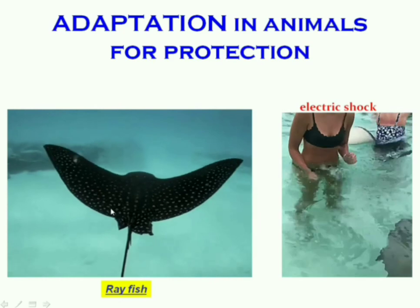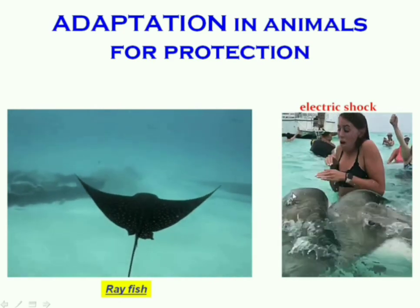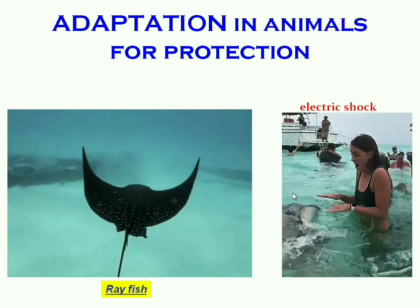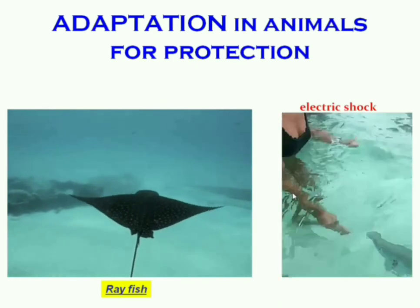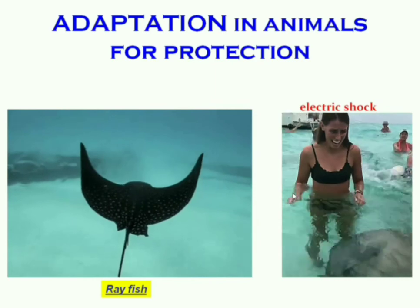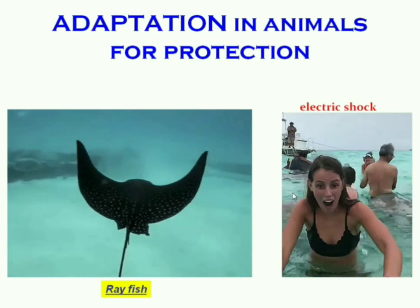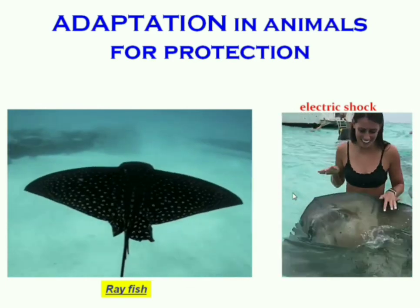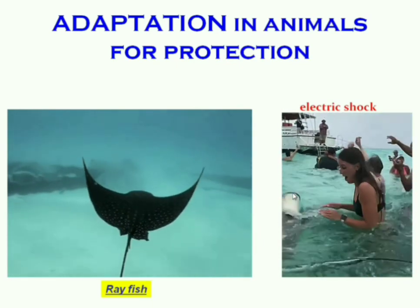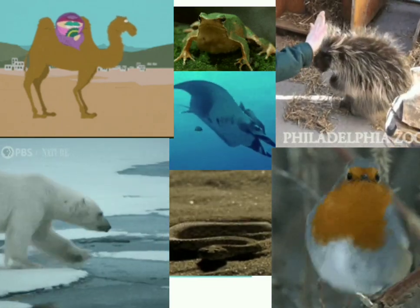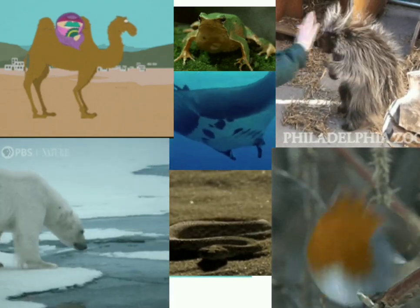The ray fish is a sea animal which gives an electric shock to its enemies. Animals protect themselves by camouflaging, running fast, using their spines, or retreating into their shells. In this chapter we have learned that animals have adapted themselves by developing special features — called adaptation — so that they can survive in their habitat.